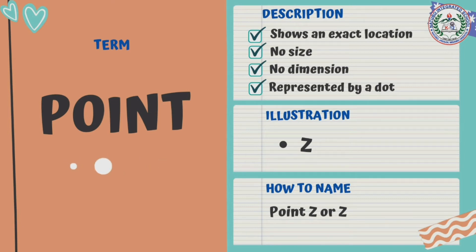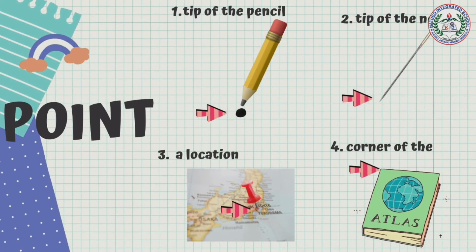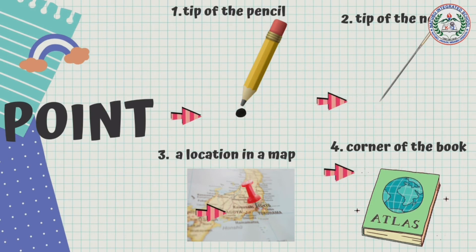Point shows an exact location. It has no size, no dimension, and is represented by a dot. So as you can see in the illustration, a dot and then the capital letter Z. So how to name point? Point Z. The following are concrete examples of a point.